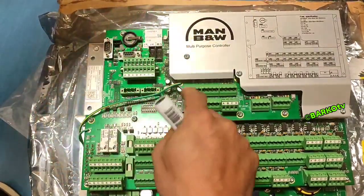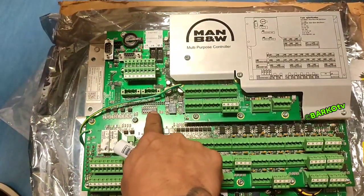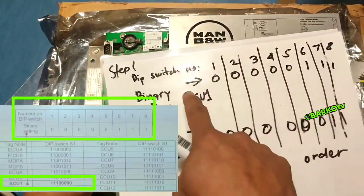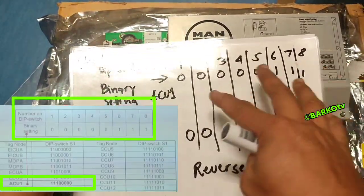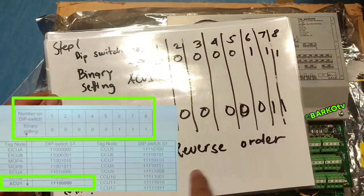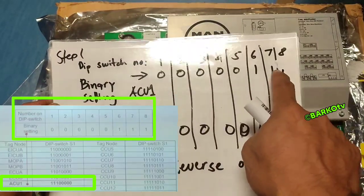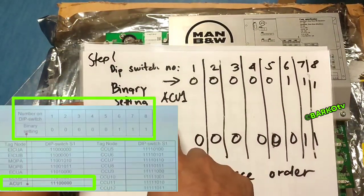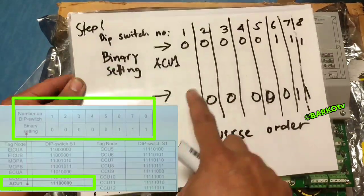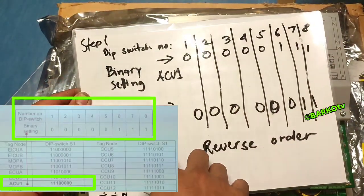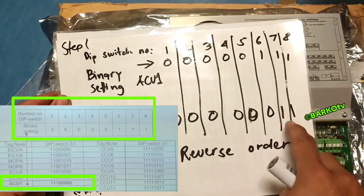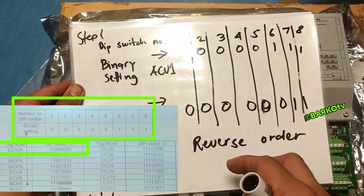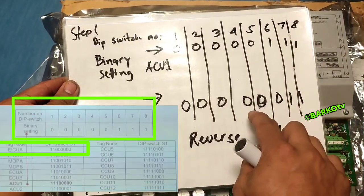This is step one. If they send the binary key, it must be in reverse order. For example, one one one zero zero zero zero — that sample is for AC1. For AC2, the ICU shows one one zero zero zero zero zero zero. The reverse order in the table is one one zero zero zero zero zero zero.